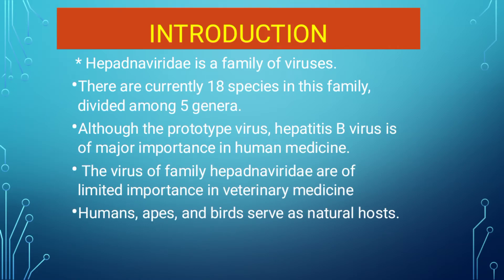Introduction. Hepatitis B is a family of virus. There are currently 18 species in this family divided among 5 genera. Although the prototype virus Hepatitis B virus is of major importance in human medicine, the viruses of family Hepatitis B are of limited importance in veterinary medicine. Humans, amphibians, and birds serve as natural hosts.